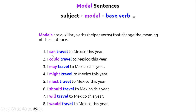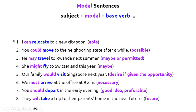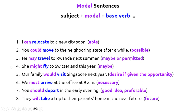The modal verb changes the meaning: travel, can travel, could travel, may travel are very different. I can relocate to a new city soon — 'can' means able. You could move to the neighboring state after a while — 'could' means possible. He may travel to Rwanda next summer — 'may' means maybe or permitted. She might fly to Switzerland this year — 'might' means maybe.